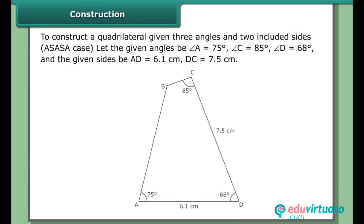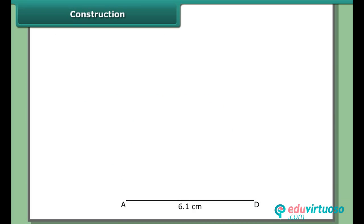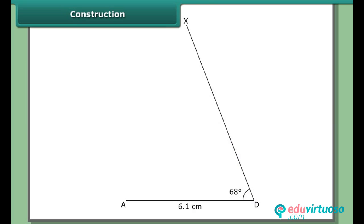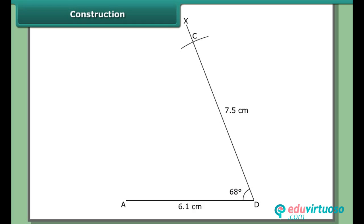Construction: To construct a quadrilateral given three angles and two included sides — the ASASA case. Let the given angles be angle A = 75°, angle C = 85°, angle D = 68°, and the given sides BA = 6.1 cm, DC = 7.5 cm. We can construct the quadrilateral directly without dividing it into two triangles. Construct AD = 6.1 cm. At D, draw angle ADX = 68°. With D as center and radius 7.5 cm, cut off DC = 7.5 cm on ray DX.